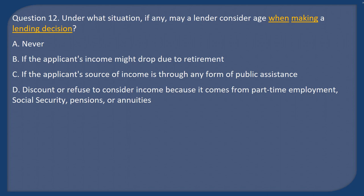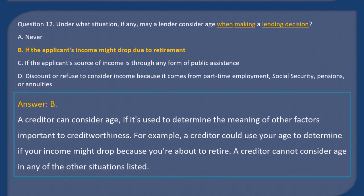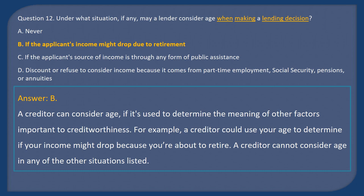Question 12: Under what situation, if any, may a lender consider age when making a lending decision? A) Never, B) If the applicant's income might drop due to retirement, C) If the applicant's source of income is through public assistance, D) To discount income from part-time employment, Social Security, pensions, or annuities. Answer: B. A creditor can consider age if it's used to determine the meaning of other factors important to creditworthiness — for example, to determine if income might drop because the applicant is about to retire.